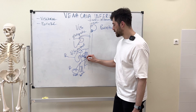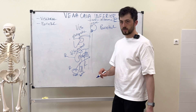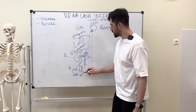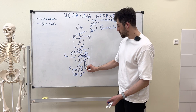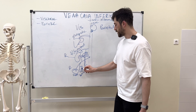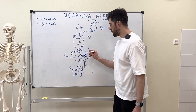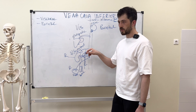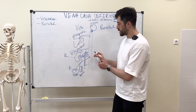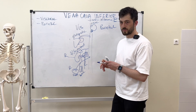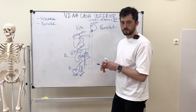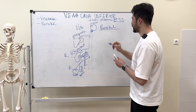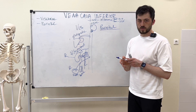On the left side, the testicular or ovarian vein drains at a 90-degree angle into the left renal vein, which then drains into the inferior vena cava. That covers the visceral branches — now let's talk about the parietal branches.